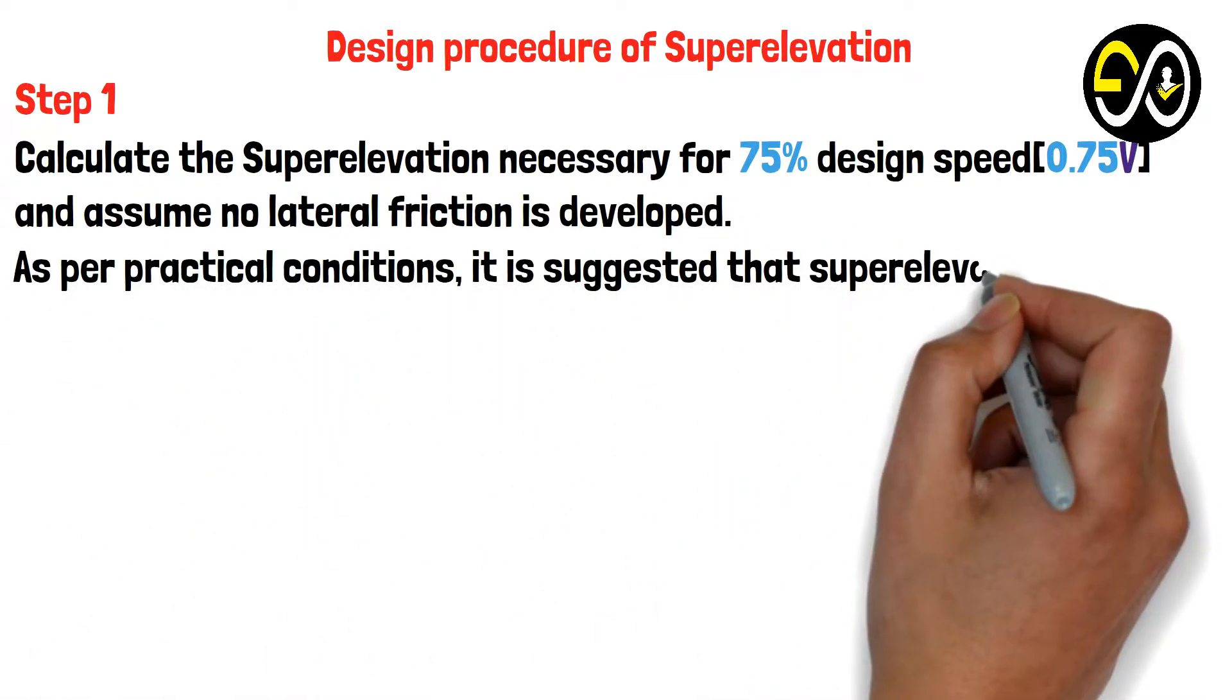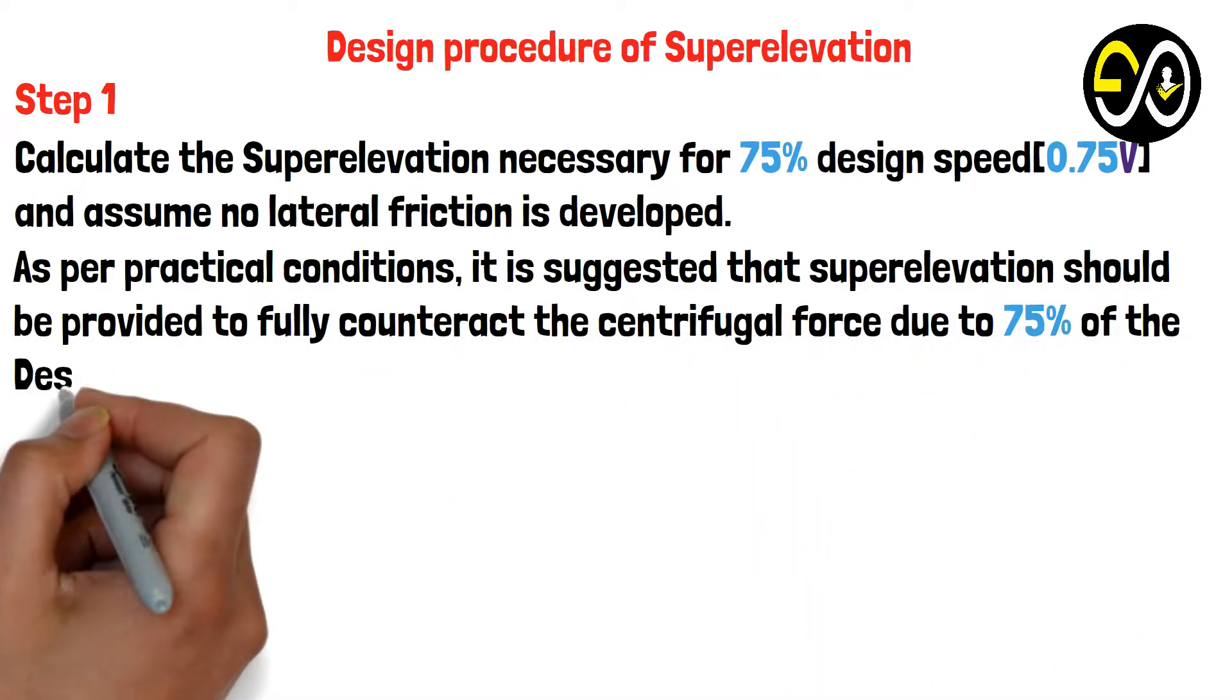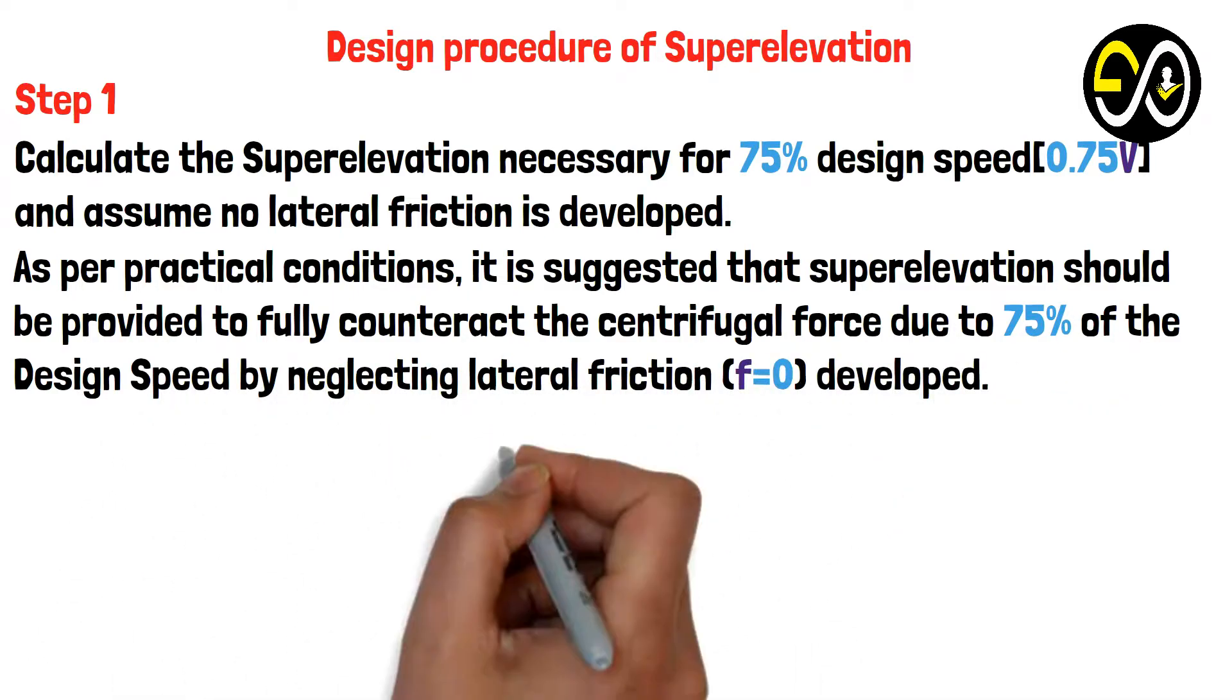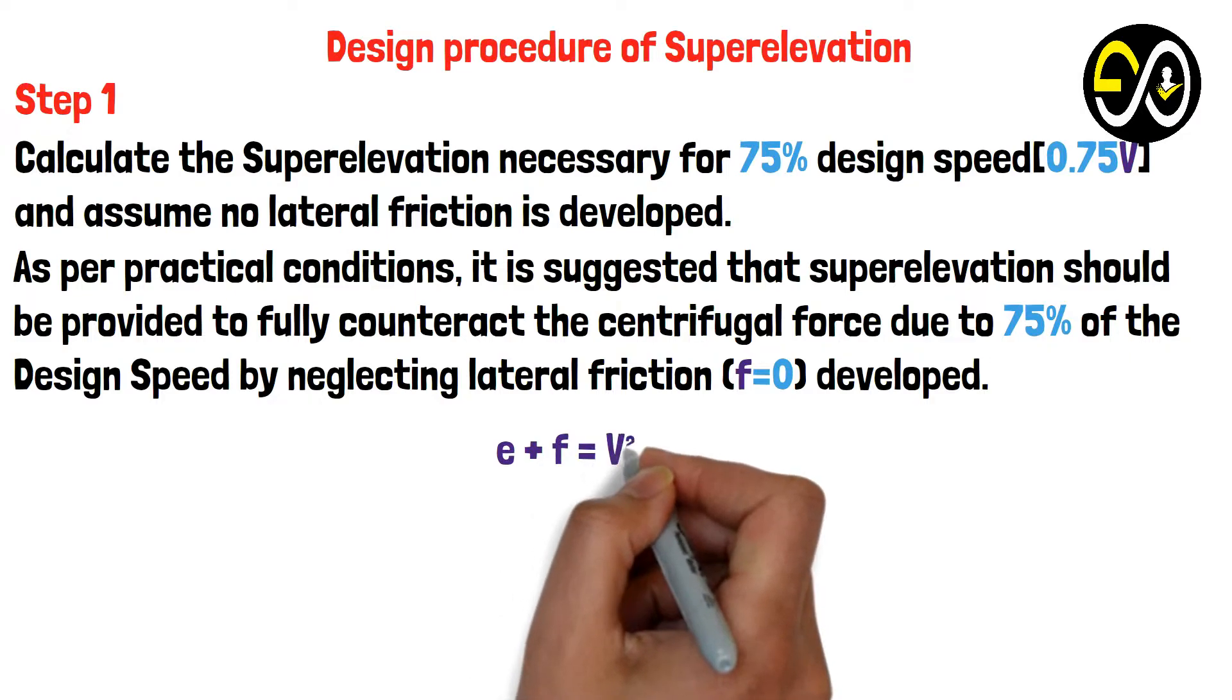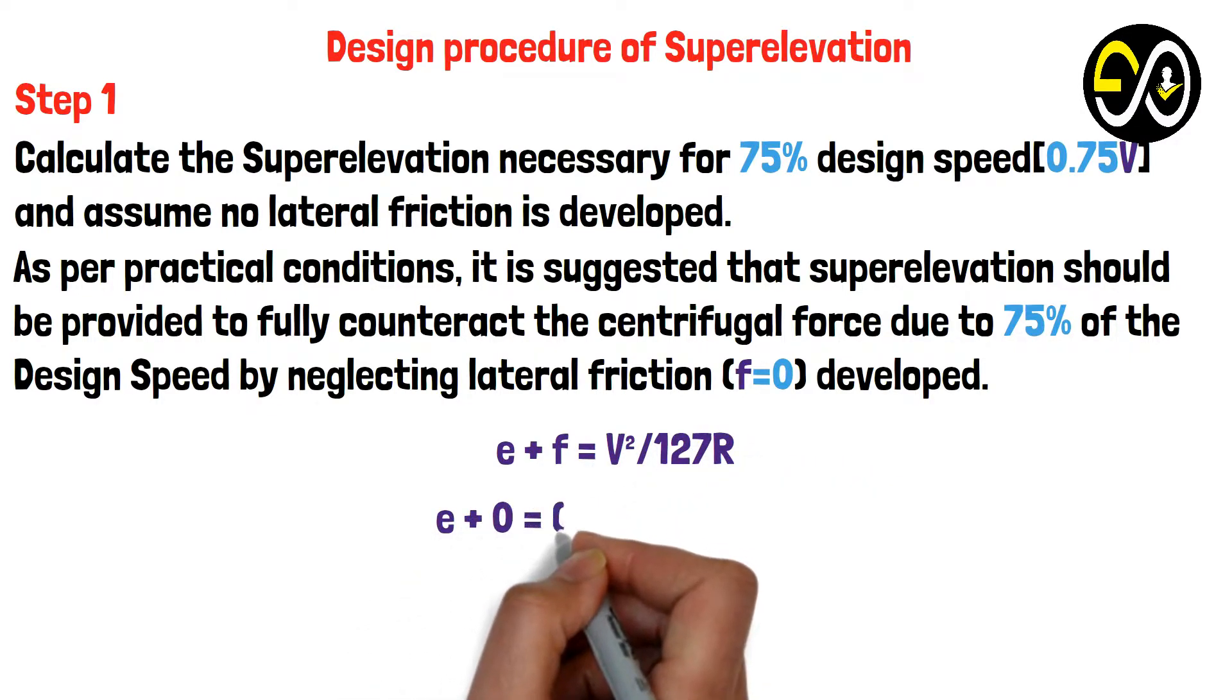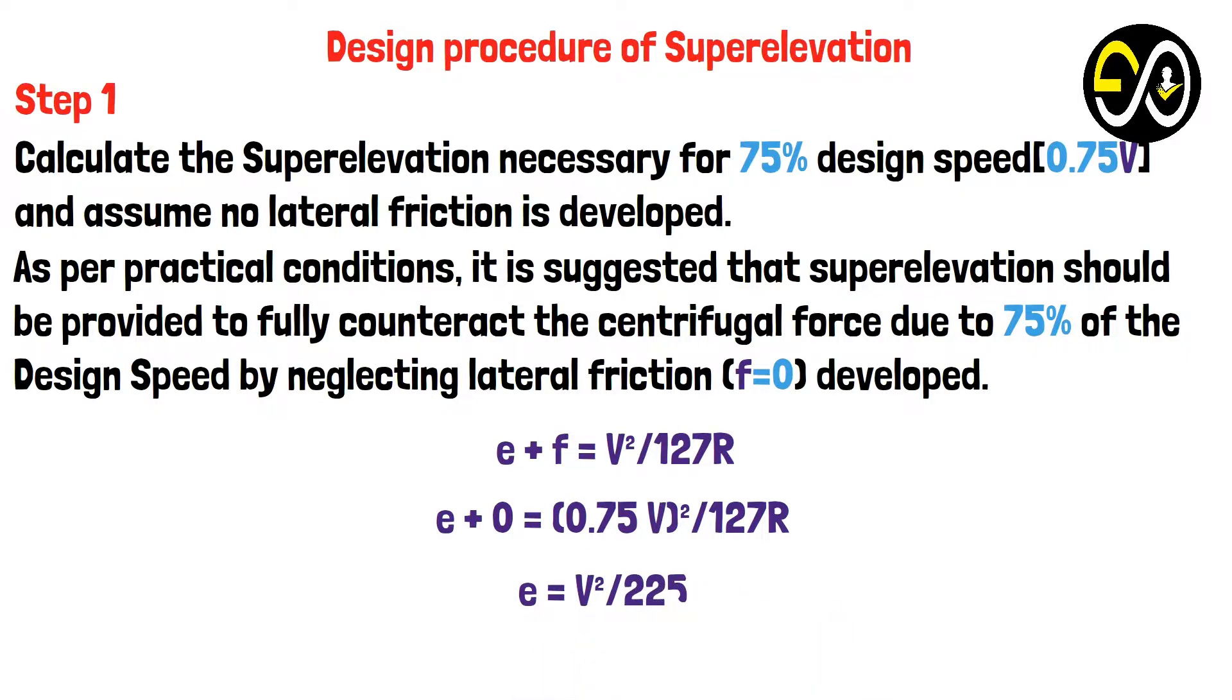Due to 75% of the design speed by neglecting lateral friction, f = 0, developed. e + f = V²/127R. Therefore e + 0 = (0.75V)²/127R. e = V²/225R.